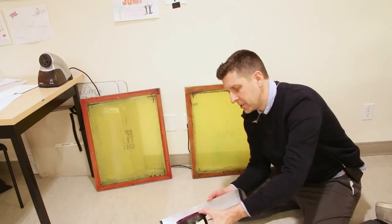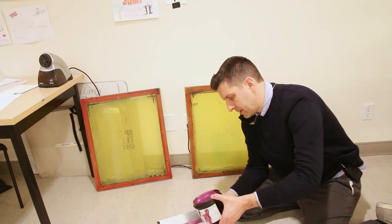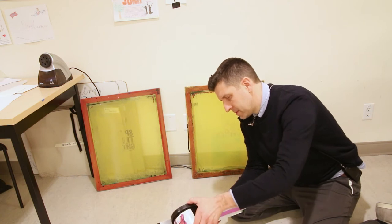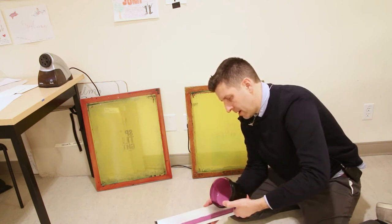We're then going to take our emulsion and pour it into the scoop coater and we don't need a ton because we're only going to coat two screens but I'd always rather have a little bit more than not enough.